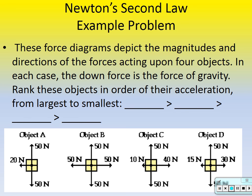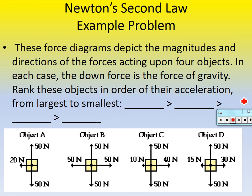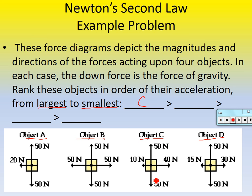Here are some practice problems. These force diagrams show the magnitudes and directions of forces on four objects — the downward force is gravity. Rank the objects from largest to smallest acceleration. Object C: the up and down forces balance — 50 up, 50 down — and left-right gives 10 left versus 40 right, so the net force is 30 newtons to the right. Object C has the largest net force.